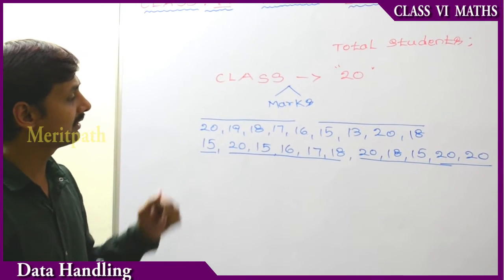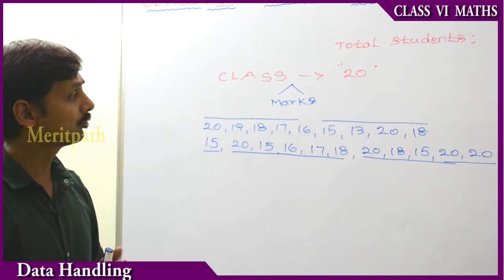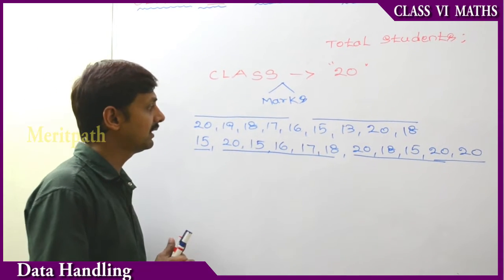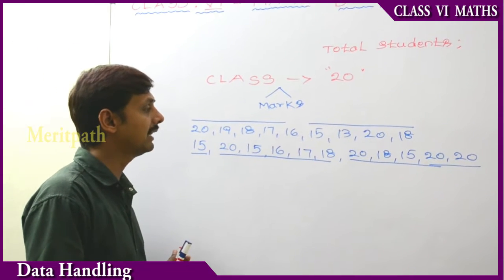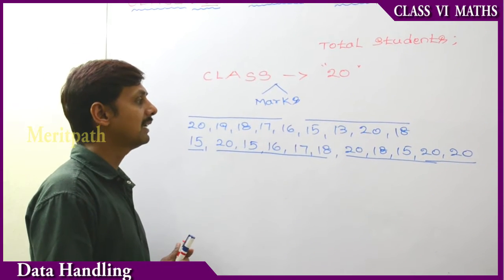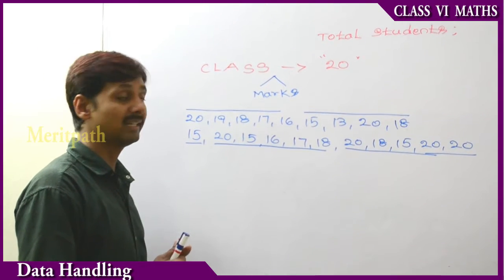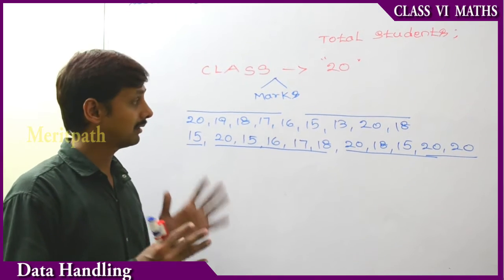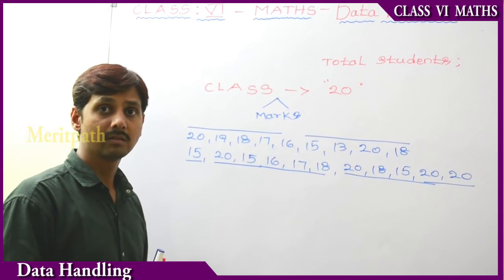The marks are: 19, 18, 17, 16, 15, 30, 20, 18, 15, 20, 15, 16, 17, 18, 20, 18, 15, 20, 20 — and these are the marks.